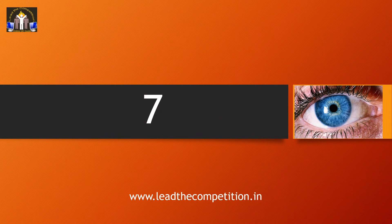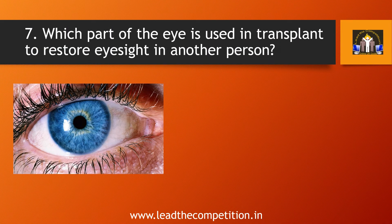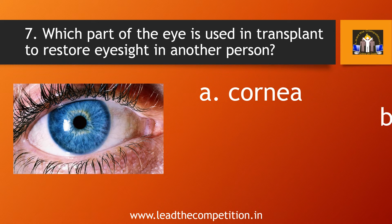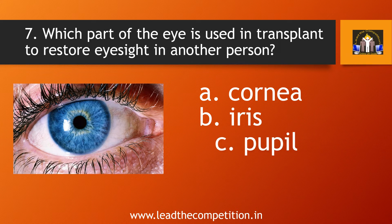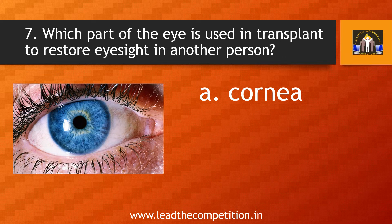Question number 7. Which part of the eye is used in transplant to restore eyesight in another person? A. Cornea, B. Iris, C. Pupil, or D. Sclera. The answer is A. Cornea.